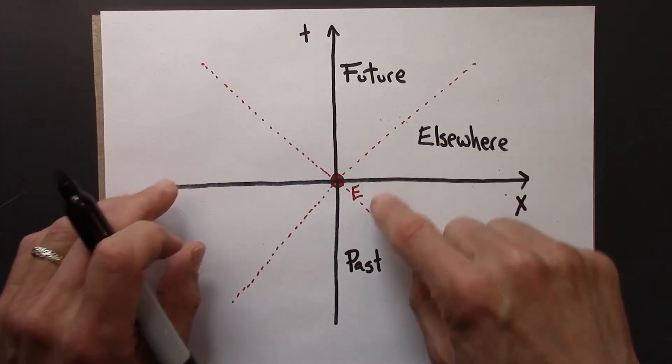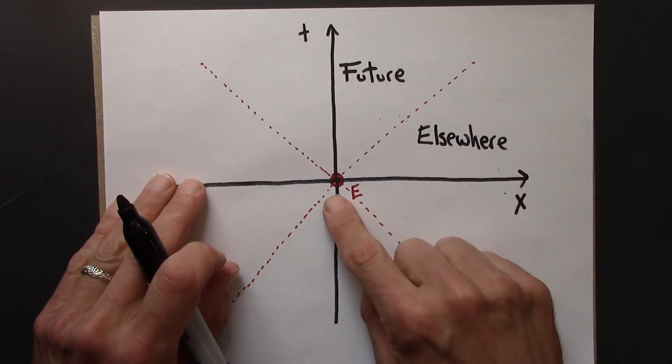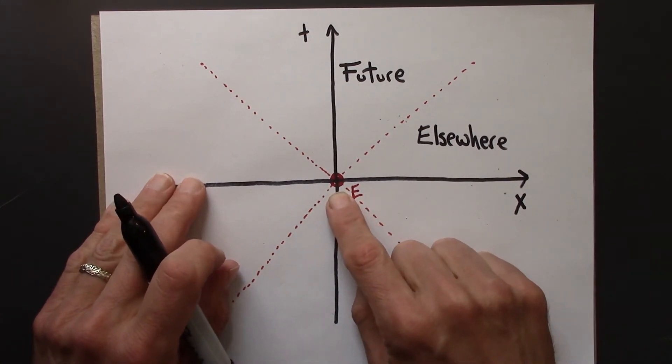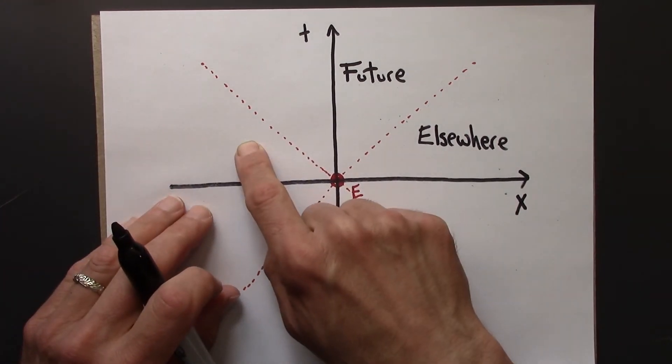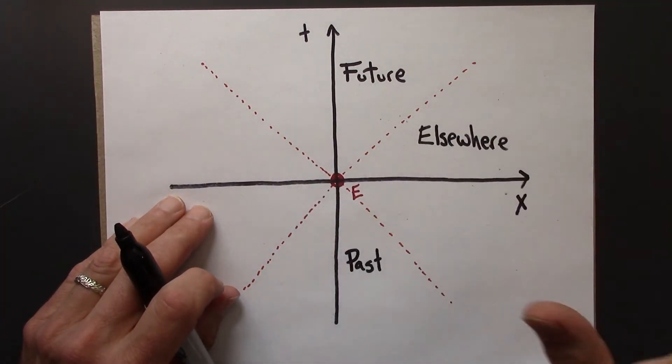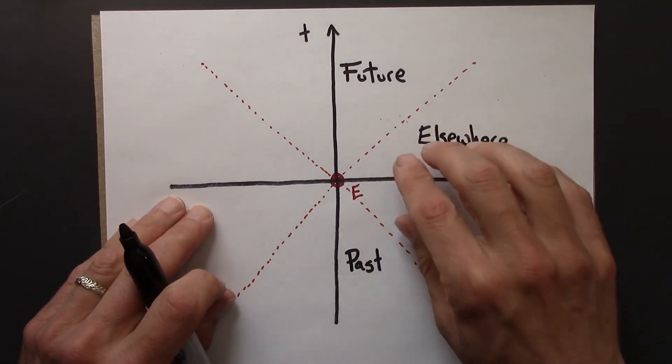So I want to stress that the future, the past, and elsewhere are all relative to a particular event. That a different event over here would have a different future, a different past, and a different elsewhere.